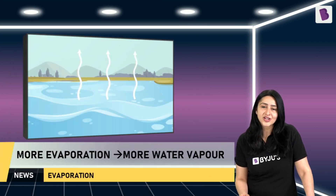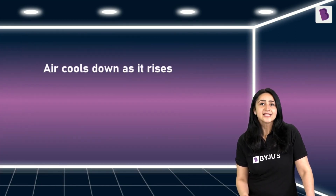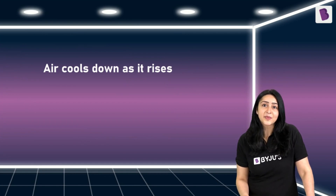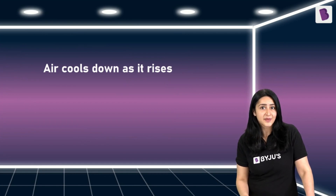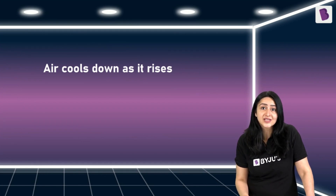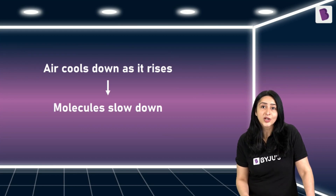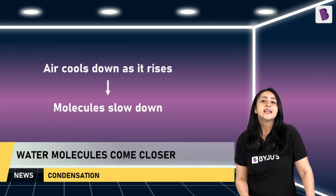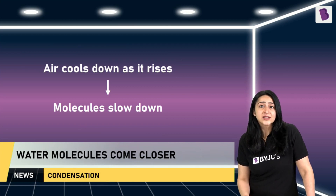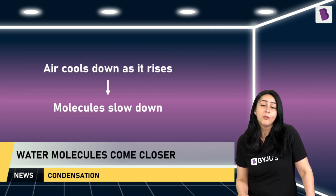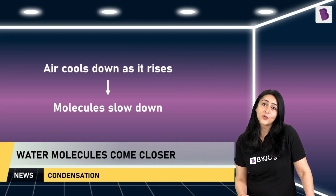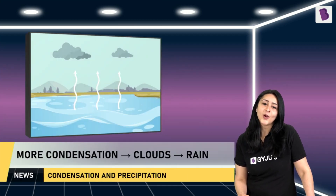As more and more evaporation occurs, more water molecules enter the air as water vapor. This water vapor carrying air rises up in the atmosphere and cools down. This means that the energy of its molecules reduces and they start moving slower. This allows the intermolecular force of attraction to bring the water molecules closer together. Some of them actually condense to form water droplets. When the air gets colder, more and more water vapor condenses and we get clouds, which eventually causes rain.